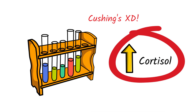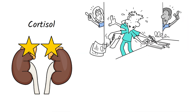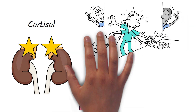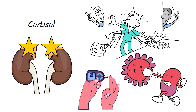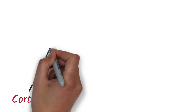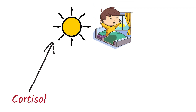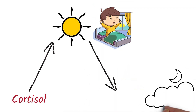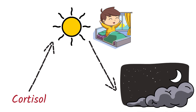Cortisol is a steroid hormone made by your adrenal glands that helps your body respond to stress, regulate blood sugar, and fight infections. In most people, cortisol levels are highest in the morning, which helps you to wake up, and lowers around midnight because that's when you're sleeping and your body is relaxed.